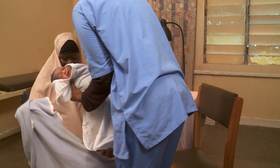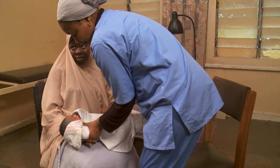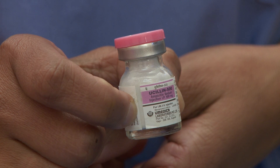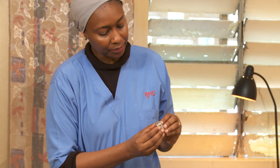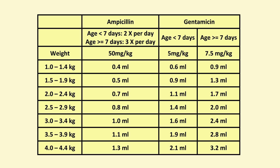Now, the baby needs her first doses of ampicillin and gentamicin. Let's start with preparing ampicillin. Always check that the expiration date has not passed. According to the dosage chart, our 4-day-old 3.2 kilo baby needs 1 ml of ampicillin IM or IV every 12 hours.